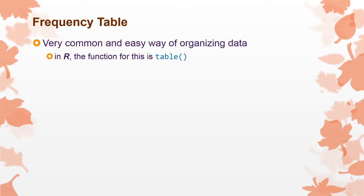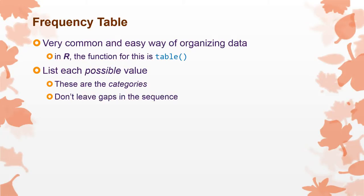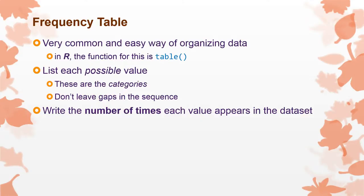So a frequency table is an extremely common and easy way of organizing data. All software can do it. In R the function is a really simple function it's just table. So if you have a variable called x you just type table and then in the parentheses you do x and it'll show your frequency table. So the way to do this is you list each possible value from your data. Those are what we call the categories. Don't leave any gaps if it's a numerical sequence or even an ordered variable sequence.